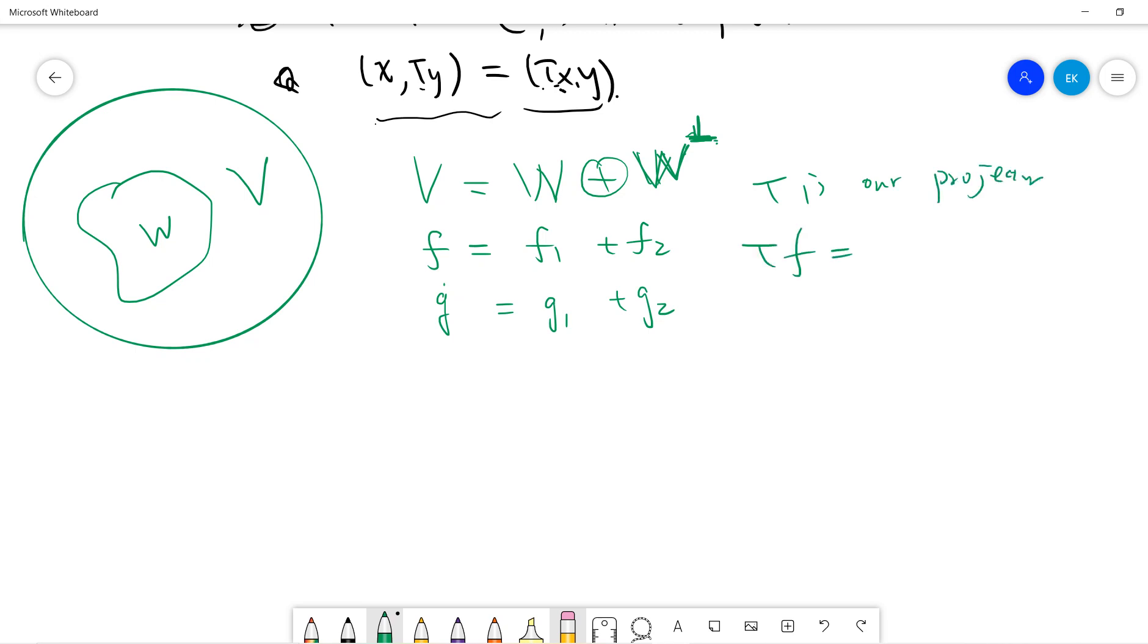Okay, so Tf will be what? Will be f₁, right? By definition, Tg will be g₁. And f₂ is orthogonal to f₁. So f₂ is in the complement of W, so this is W.